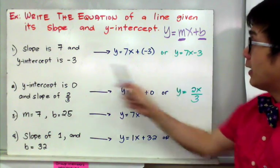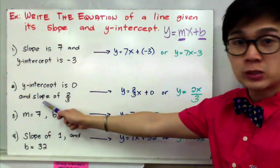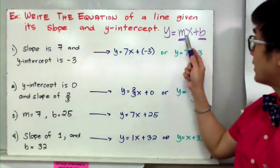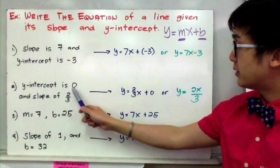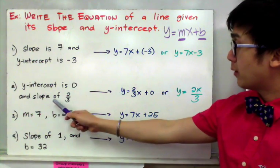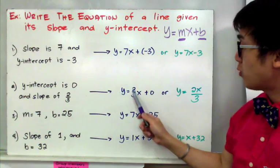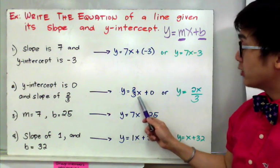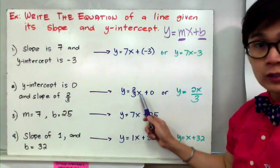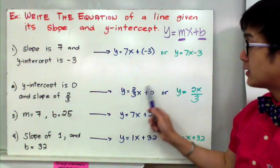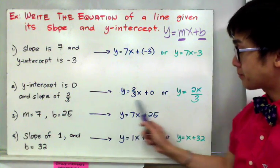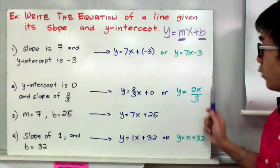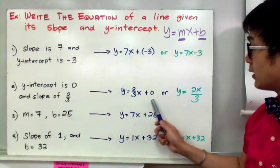For example number 2, the y-intercept is equal to 0 and the slope is 2/3. All we need to do is replace m and b by their corresponding parts. Since the y-intercept is 0 and the slope is 2/3, we have 2/3 x. The slope is always with x, so you will never get lost writing the equation of a line. The coefficient with x is the slope, and the constant will always be your y-intercept. We can write the equation as y equals 2x over 3.